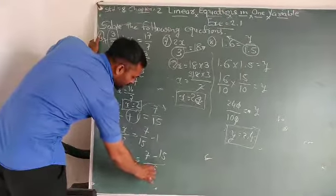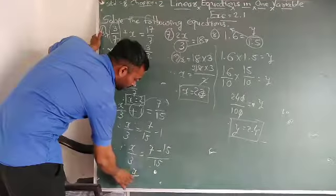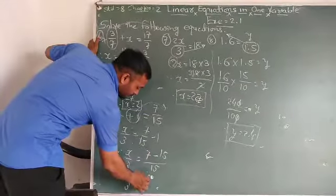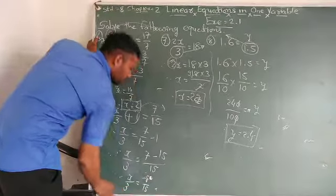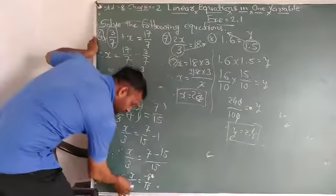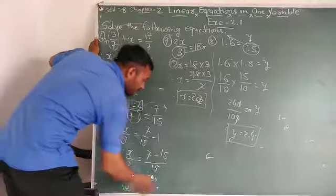x/3 = (7-15)/15 = -8/15. Okay? So now division by 3 is converted into multiplication.